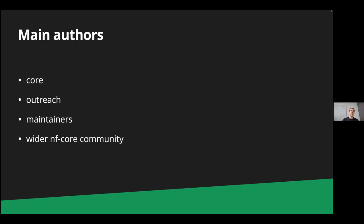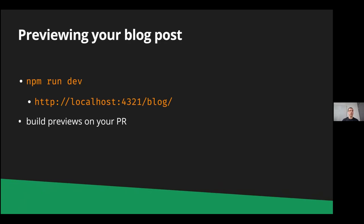When you write your blog post, how can you actually look at it? There are two ways. The easier one is to just run npm run dev on your local machine, then go to the blog page on localhost and you should see your blog post appear there — if you set the date correctly. And also when you submit your PR, it will be built, and if the publication date is in time it should appear there too.